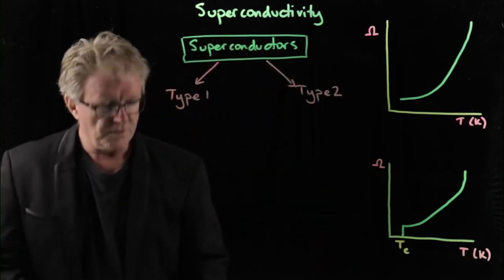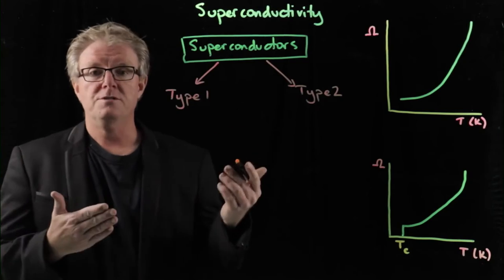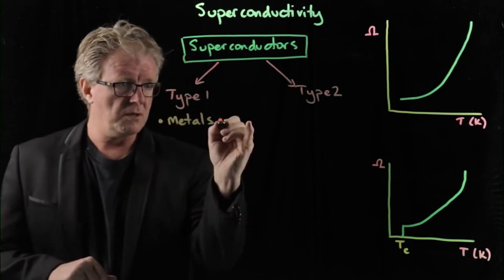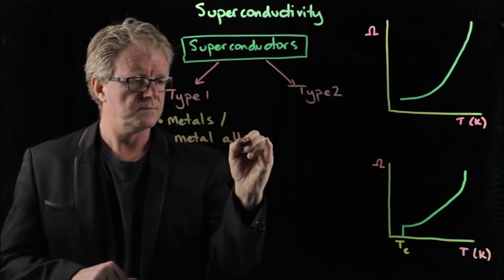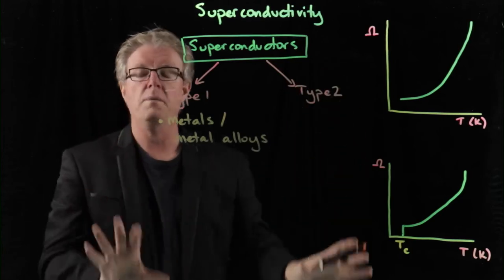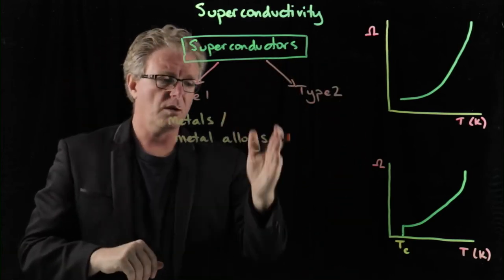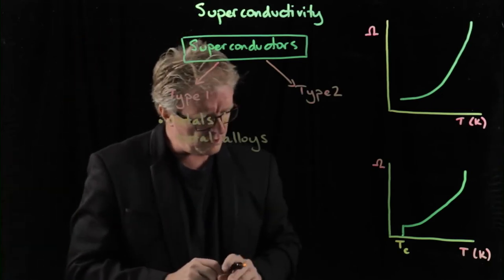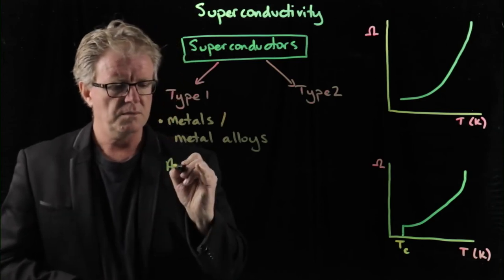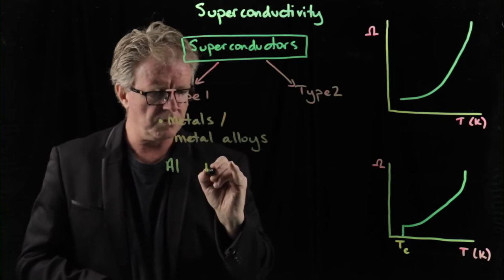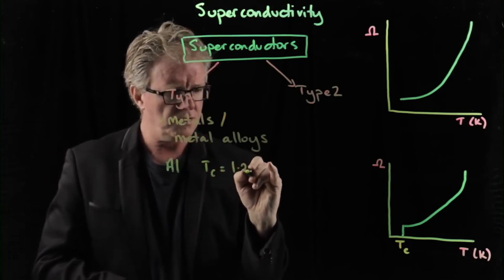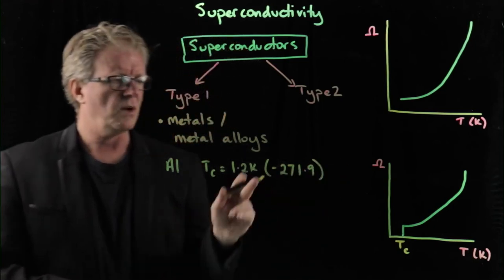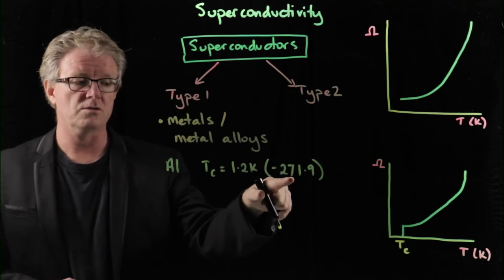Type 1 was the ones that were first examined first. Hence type 1. And they were metals and also metal alloys. We're going to be continuing this down a whole page. We'll put a line through there and just keep going down. Type 1, metals and metal alloys. If we have a look at some examples, we have aluminum. Aluminum has a critical temperature of 1.2 Kelvin, which turns out to be minus 271.9. So absolute zero is minus 273.2, so it's very, very close. 1.2 Kelvin.